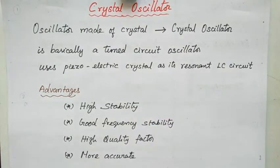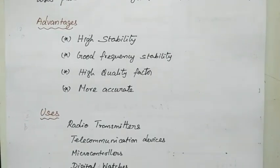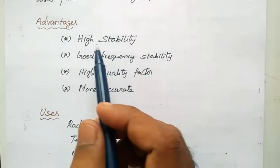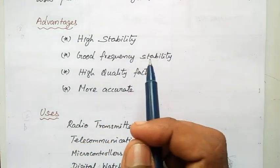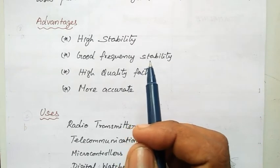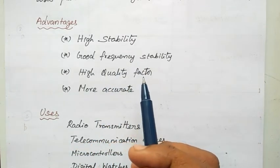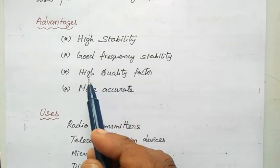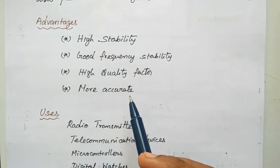Next we see what are the advantages of using this type of oscillator. First, it provides high stability. Second, good frequency stability — at a particular frequency it gives good oscillations. Third, high quality factor, which is the main requirement for inductors. Fourth, it is more accurate — the accuracy is high when using a crystal oscillator.